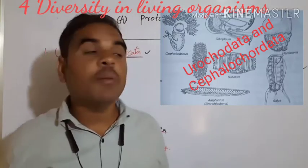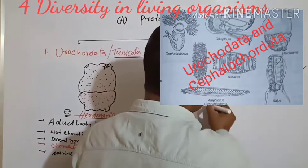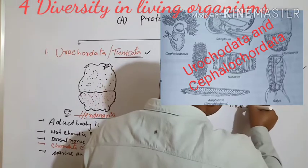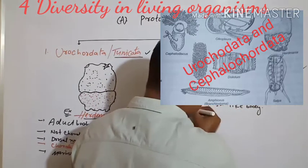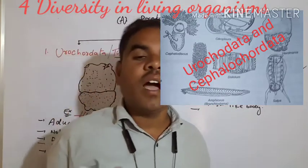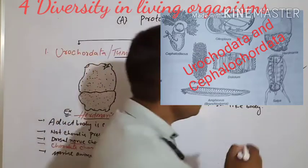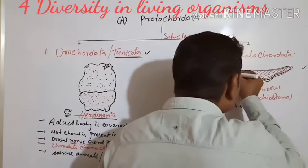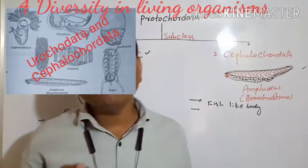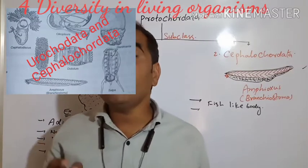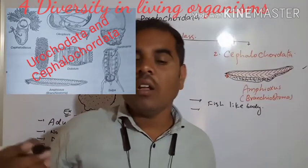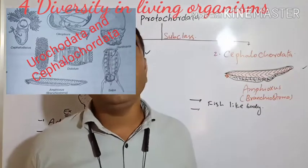In Cephalochordata, the body is fish-like. The body is fish-like, metameric, and segmented. They are headless — segmentation occurs here, similar to Arthropoda. They are coelomate animals. The notochord and nerve cord extend throughout the entire length of the body.